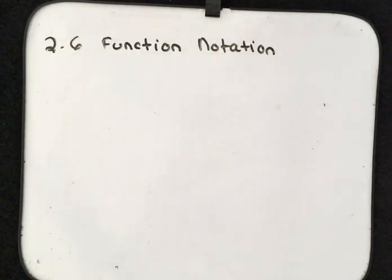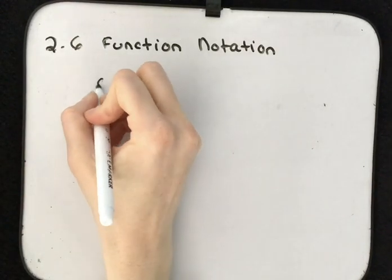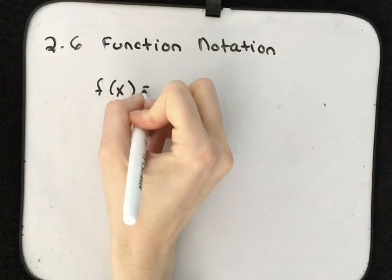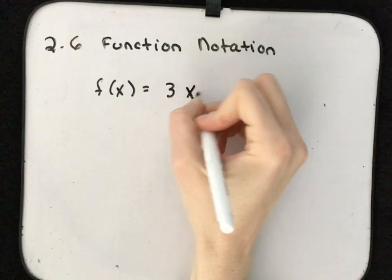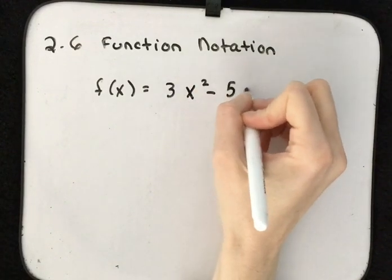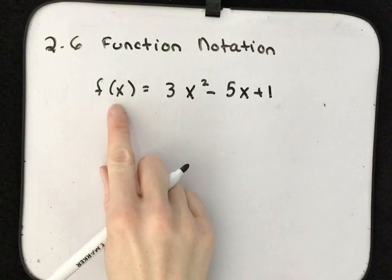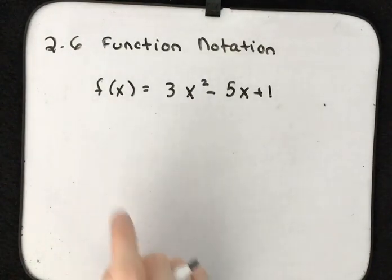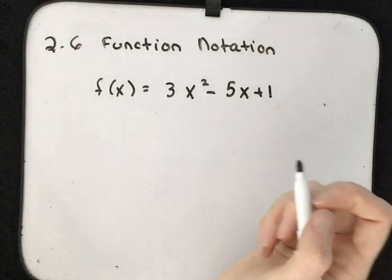Instead of writing y equals, sometimes you will see f of x equals. For example, f of x equals 3x squared minus 5x plus 1. This is the function f evaluated for variable x — f is the name of the function — so instead of saying y equals, we say f of x.